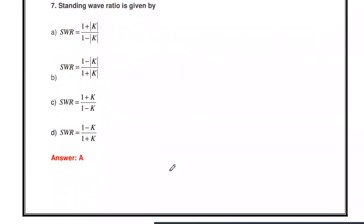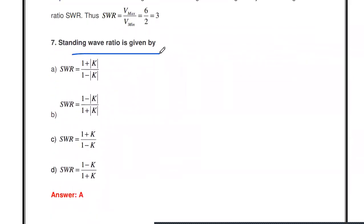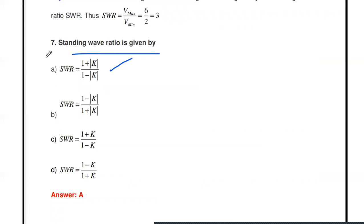The next question: the standing wave ratio in terms of the reflection coefficient k is given by — which formula? The correct formula is SWR = (1 + |k|) / (1 − |k|), where k is the reflection coefficient. Options without the modulus or with inverted signs are incorrect. Remember this formula, as it applies to multiple problems.